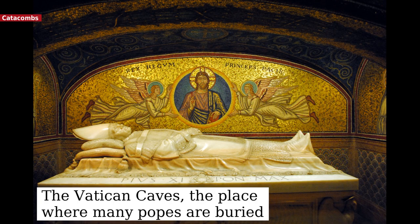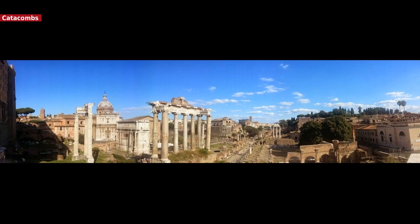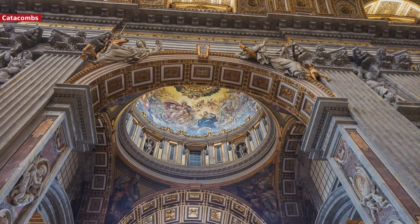Rome has an extensive amount of ancient catacombs, or underground burial places under or near the city, of which there are at least 40, some discovered only in recent decades. Though most famous for Christian burials, they include pagan and Jewish burials, either in separate catacombs or mixed together. The first large-scale catacombs were excavated from the 2nd century onwards, originally carved through tuff, a soft volcanic rock, outside the boundaries of the city, because Roman law forbade burial places within city limits. Currently, maintenance of the catacombs is in the hands of the papacy, which has invested in the Salesians of Don Bosco the supervision of the catacombs of St. Calixtus on the outskirts of Rome.